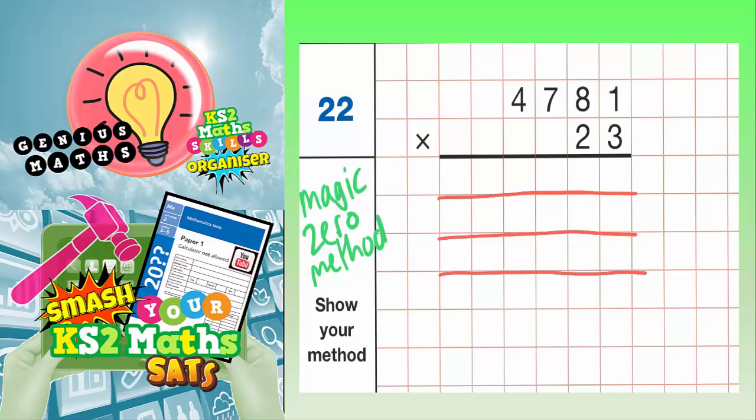Let's work it out now. The first thing we're going to do is multiply everything on the top row by the three. So we're going to go three ones, three eights, three sevens, three fours in that order. Three ones, three eights, three sevens, three fours.